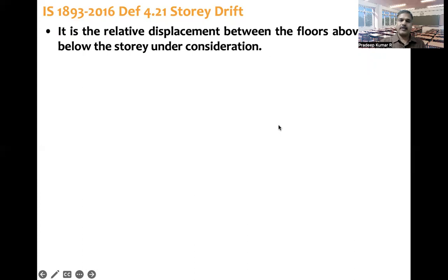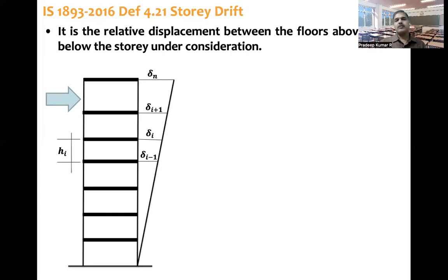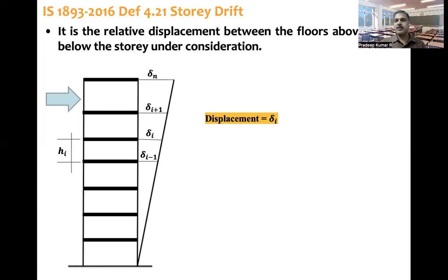Looking at a tall building as an example, we need to understand what is displacement, what is drift, and what is drift ratio before going into the clause of lateral drift. Under the action of lateral force — wind or earthquake — the building deforms or displaces. Delta-i is the displacement of the floor under consideration, delta-(i-1) is the floor below, delta-(i+1) is the floor above, delta-N is the roof displacement, and H-i is the floor height. Displacement is simply the lateral displacement of the i-th floor.